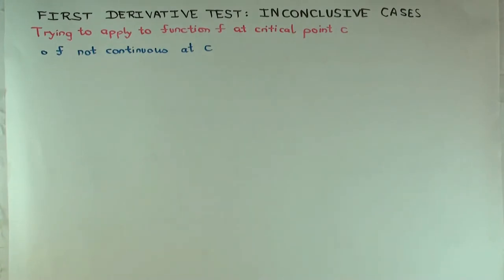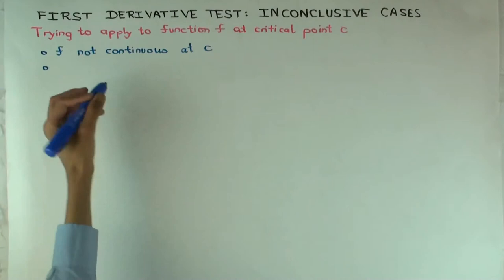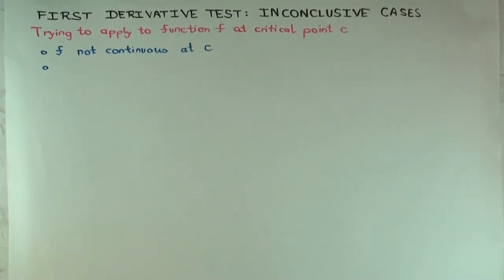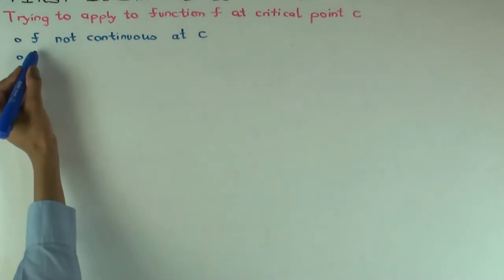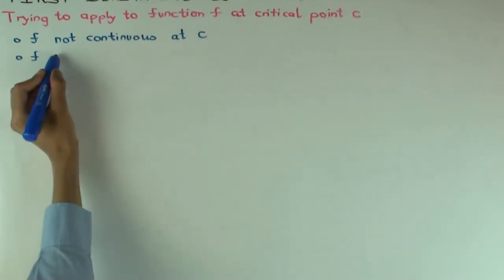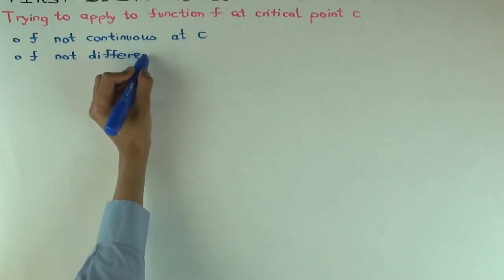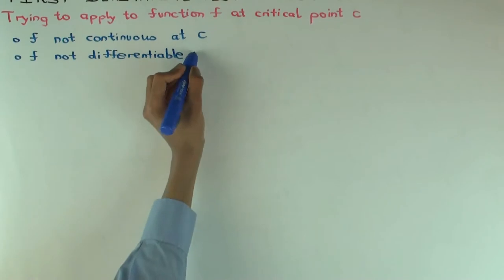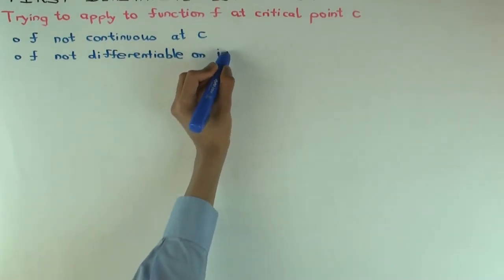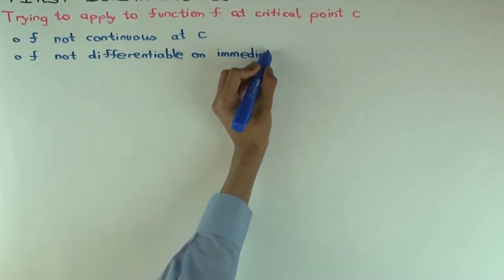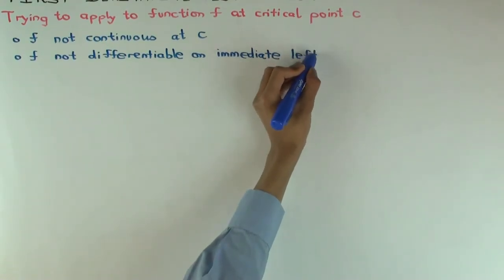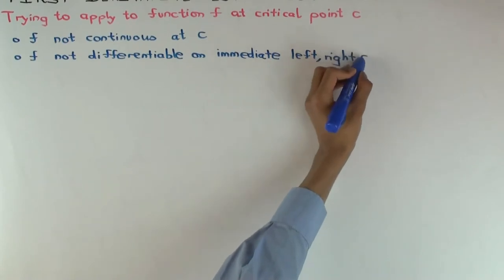The second problem: what other issues could arise? The next assumption is that f is differentiable on the immediate left and on the immediate right of c. If it's not differentiable on the immediate left or the immediate right, you cannot use the first derivative test, because if the derivative doesn't exist on those sides, you cannot talk about whether it's positive or negative.